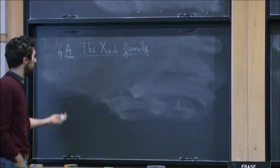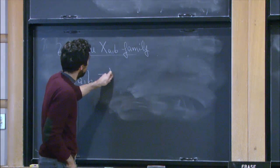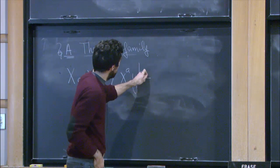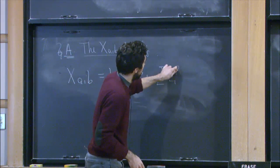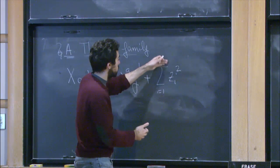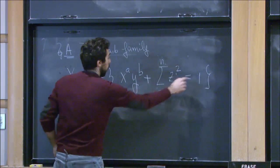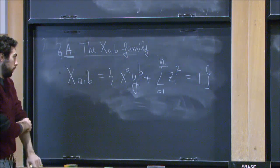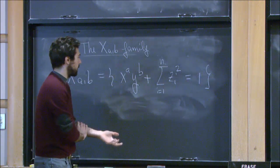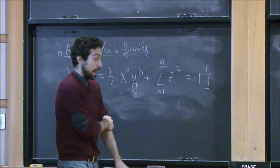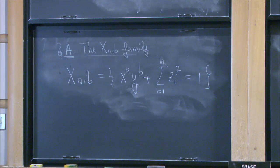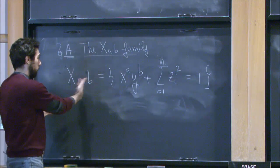Let's start with the X_AB family. This is a family of affine algebraic manifolds, which are hence Stein surfaces or Stein manifolds of some dimension, indicated to us by Paul Seidel. We call them X_AB and they are the zero set of the following polynomial: X to the A, Y to the B, and then a certain sum of variables squared. Why is this particularly interesting?